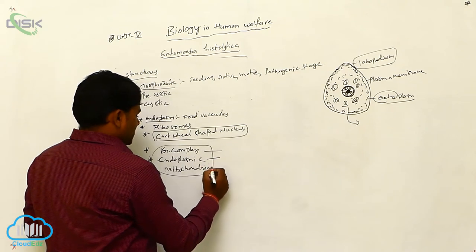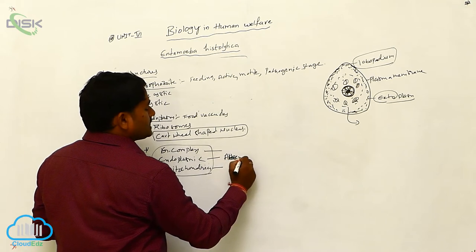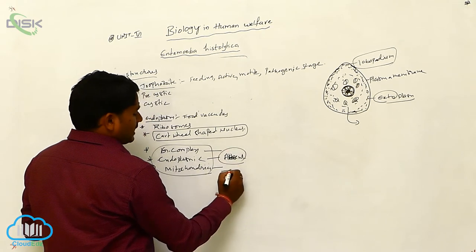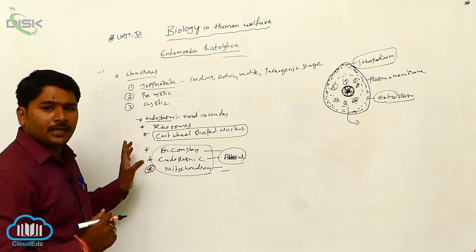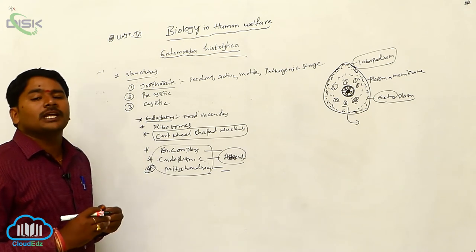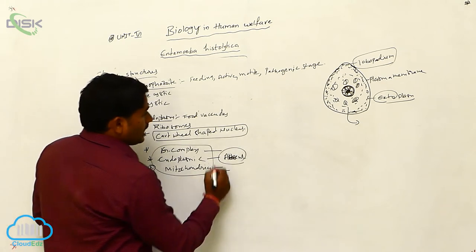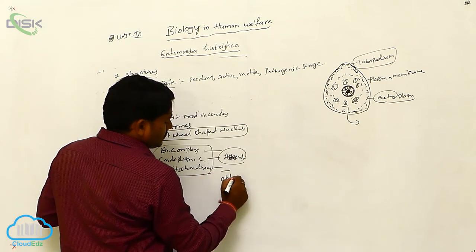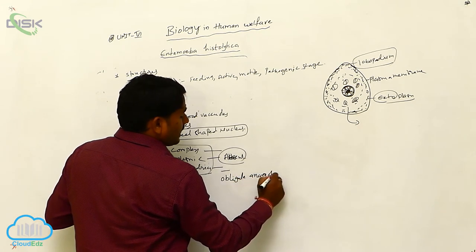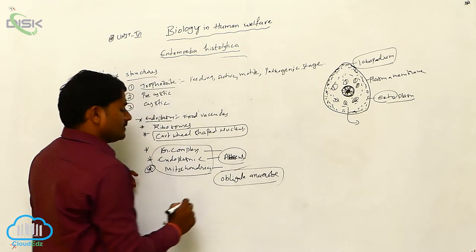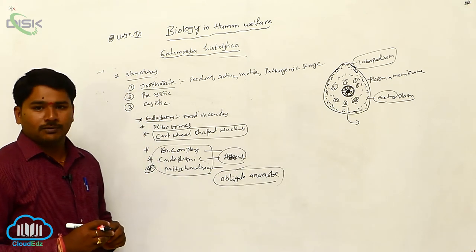When Golgi complex, endoplasmic reticulum, and mitochondria are absent, aerobic respiration cannot be performed. It can only perform anaerobic respiration. Hence, Entamoeba histolytica is known as an obligate anaerob.